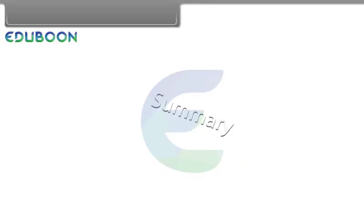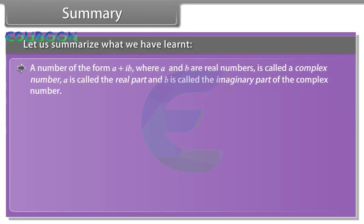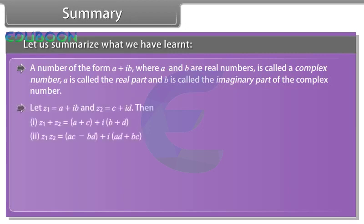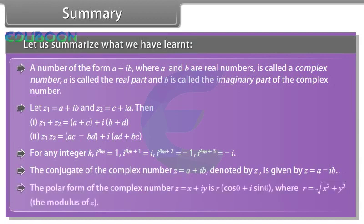Summary. A number of the form (a plus b iota), where a and b are real numbers, is called a complex number. A is called the real part and b is called the imaginary part. For any integer k, the powers of iota cycle with period 4. The conjugate of complex number z is denoted z-bar. The polar form of a complex number is r(cos theta plus iota sin theta).